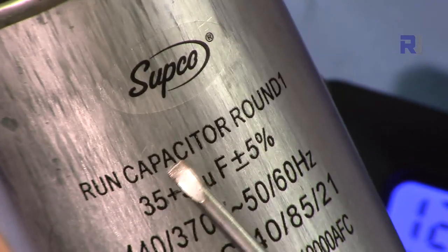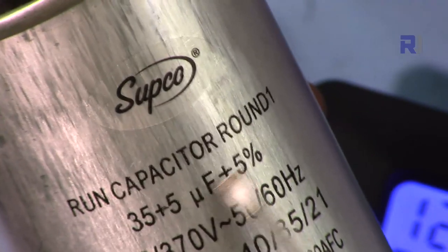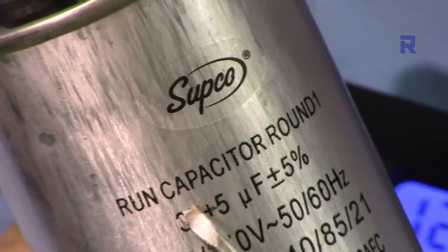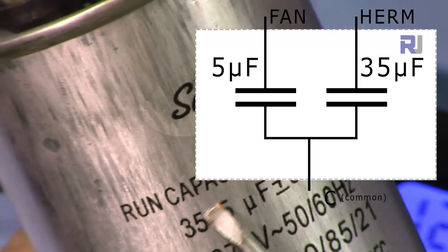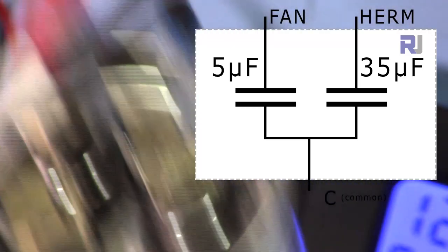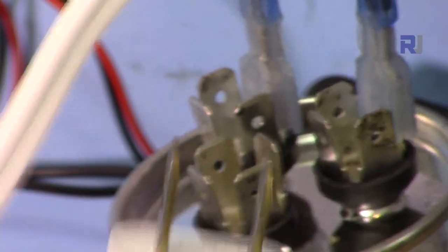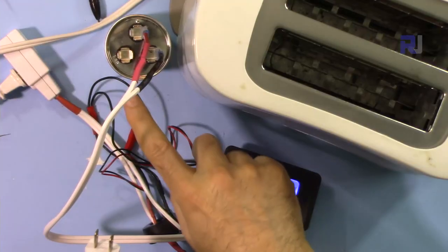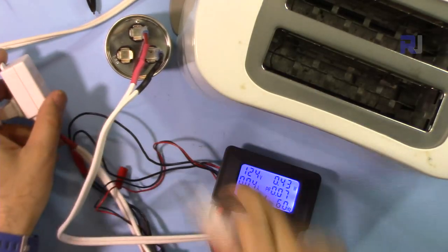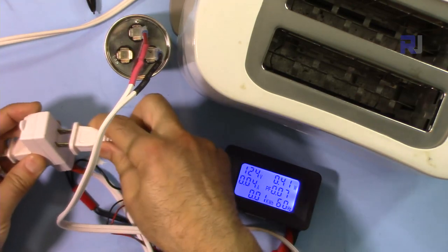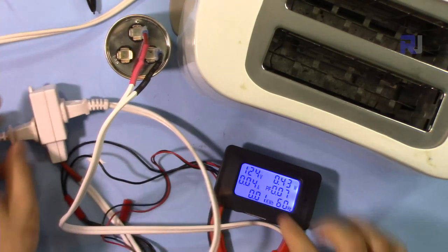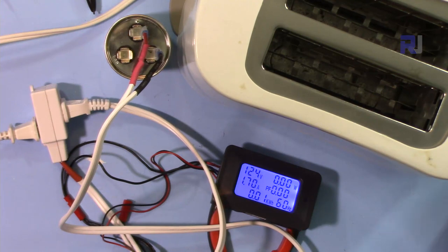Now this is off. This is called a run capacitor, this is used for an air conditioner and it says 35 plus 5 microfarad. It has two capacitors. I've connected it to 35 microfarad and this is the plug for this one which I'm going to connect as load. I'm going to connect the capacitor without the toaster, pay attention here.